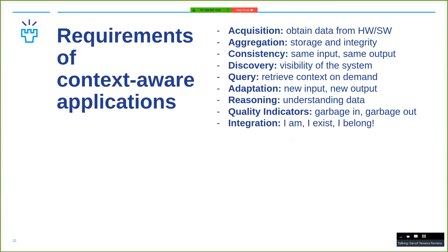Discoverability — one of the challenges when we build a context-aware system is that things happen automatically in the background. How do you make sure the user knows what's going on? The ability to query the system: 'what are you thinking?' and 'why are you thinking in this way?' Adaptation — making the application learn with new data; as you get new data, can it learn? Understanding the data — making sense of the data is another one.